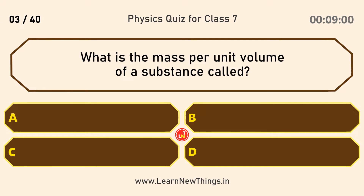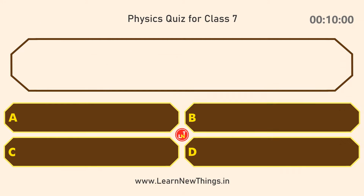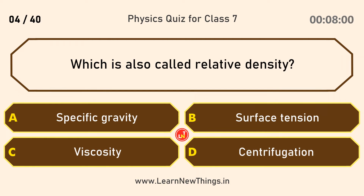What is the mass per unit volume of a substance called? Density, which is also called relative density or specific gravity.